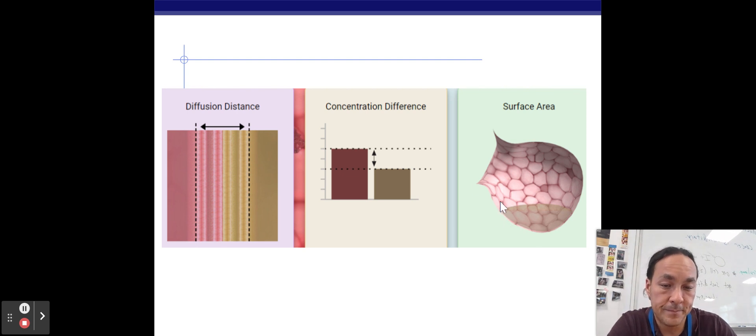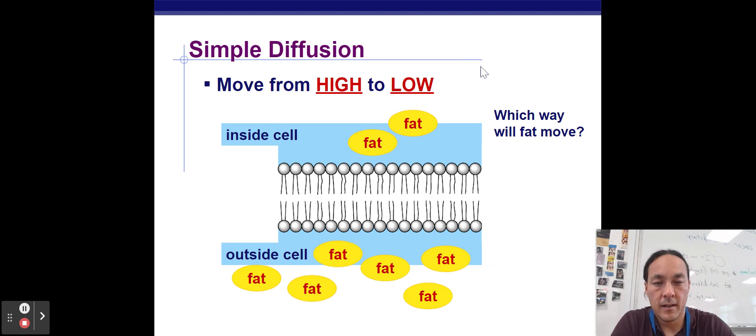This is important with COVID. In your alveoli, if they get full of fluid, it decreases the surface area. By decreasing the surface area, you have less space with which oxygen molecules can pass in and out of the cells. And so therefore, you will slow down the rate of diffusion. These are just factors that affect the rate of diffusion.